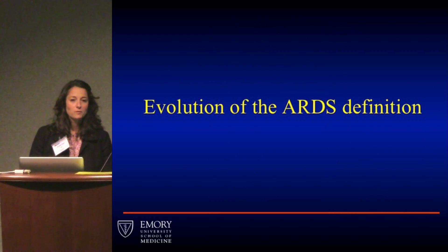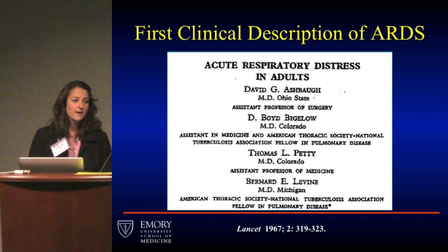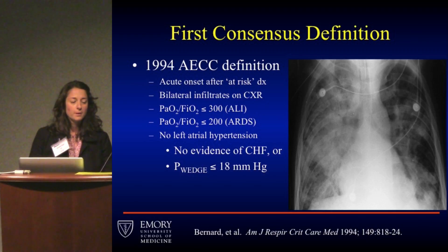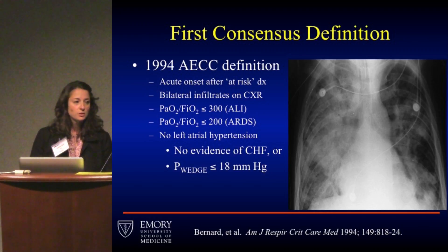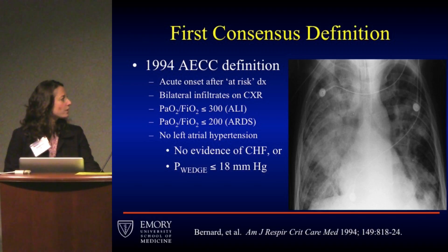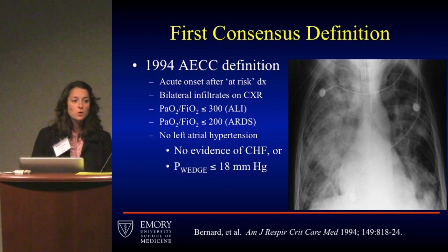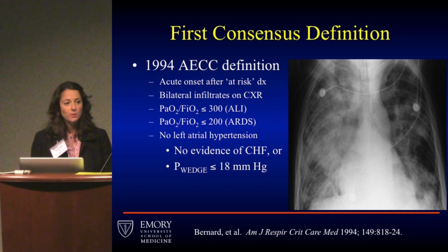The definition has changed a little over time. The first clinical description of ARDS was in 1967 and was published by Ashbaugh and colleagues. Then in 1994, the American-European Consensus Conference came up with a widely agreed-upon definition that included acute onset after an at-risk diagnosis, bilateral infiltrates on chest X-ray, severe hypoxemia defined as a PF ratio ≤300 (termed ALI or acute lung injury) or a PF ratio ≤200 (termed ARDS), and no left atrial hypertension — either no evidence of congestive heart failure or pulmonary capillary wedge pressure ≤18.